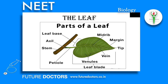The leaf is attached to the stem by the leaf base. In monocots, the leaf base is said to be sheathing as it expands and partially or wholly surrounds the stem. In dicots, the leaf base bears two lateral outgrowths called stipules. Petiole is the stalk of a leaf that orients the leaf blade towards light. The petiole raises the lamina to the level of the stem so as to provide maximum exposure to light.